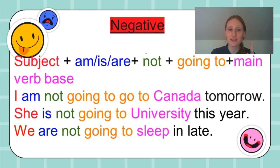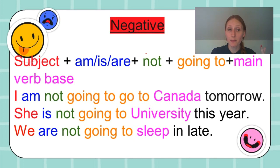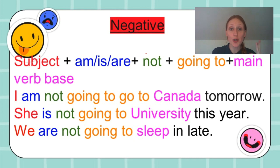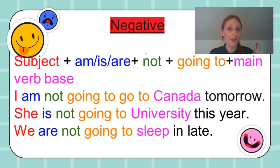Let's take a look at the negative form. Subject, am/is/are, not, going to, plus your main verb base. I am not going to Canada tomorrow. She is not going to university this year. And we are not going to sleep in late. It doesn't seem simple, but the more you use it, the more familiar you become with it and the more comfortable you are to use it.